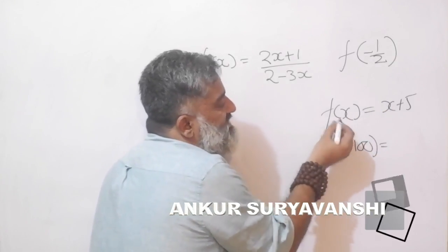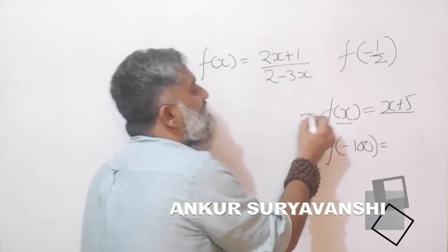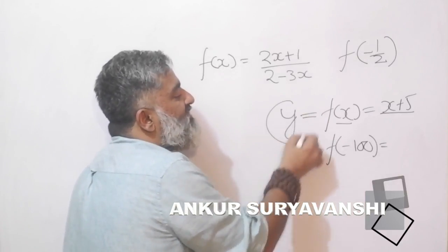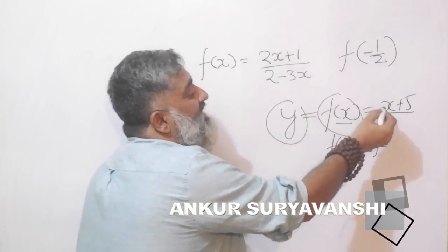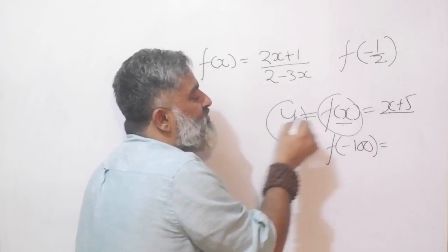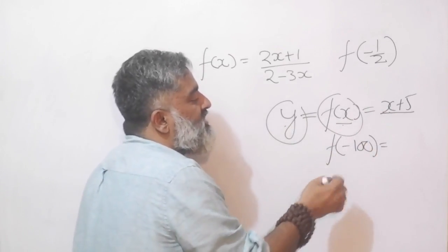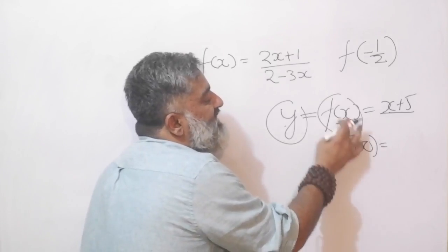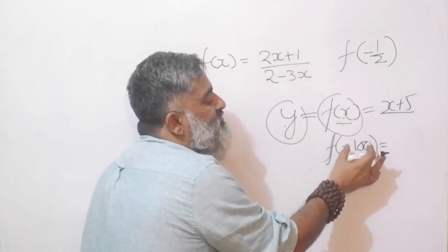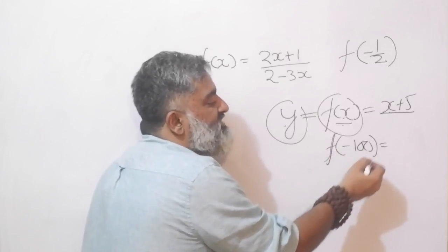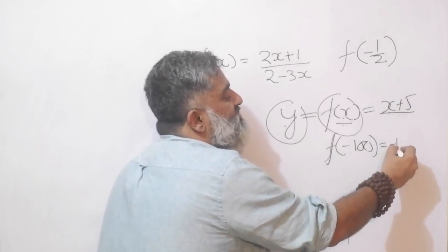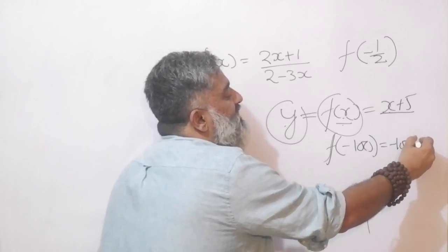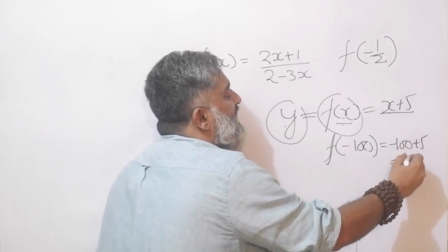What this means is the function of x is equal to y, the final value. This is the input, this is the output. The meaning of this symbol is wherever there is x in the story, instead of x put a minus 100 or whatever is inside the bracket. So wherever there is x, I will put minus 100 and my overall answer would be negative 95.